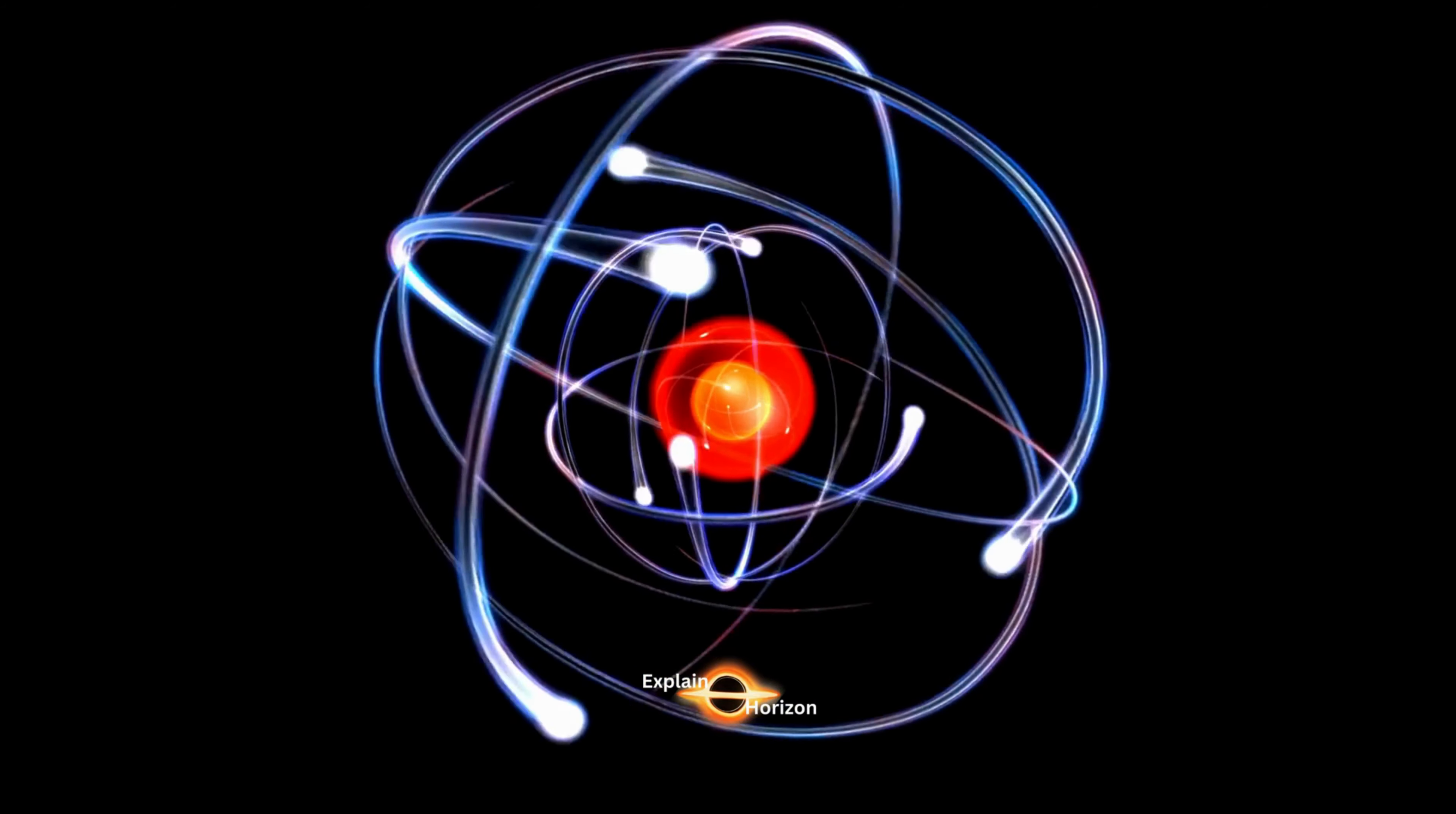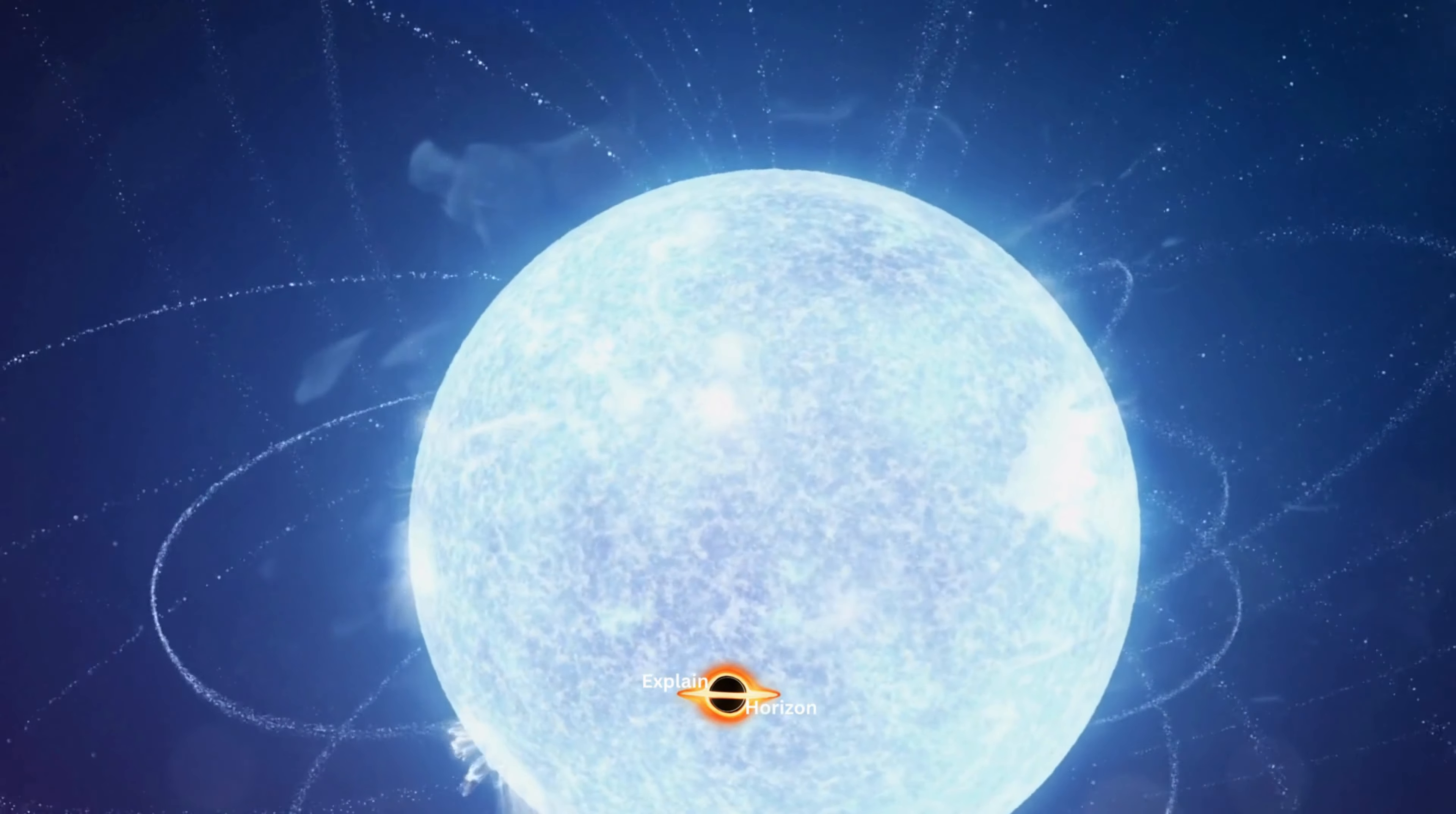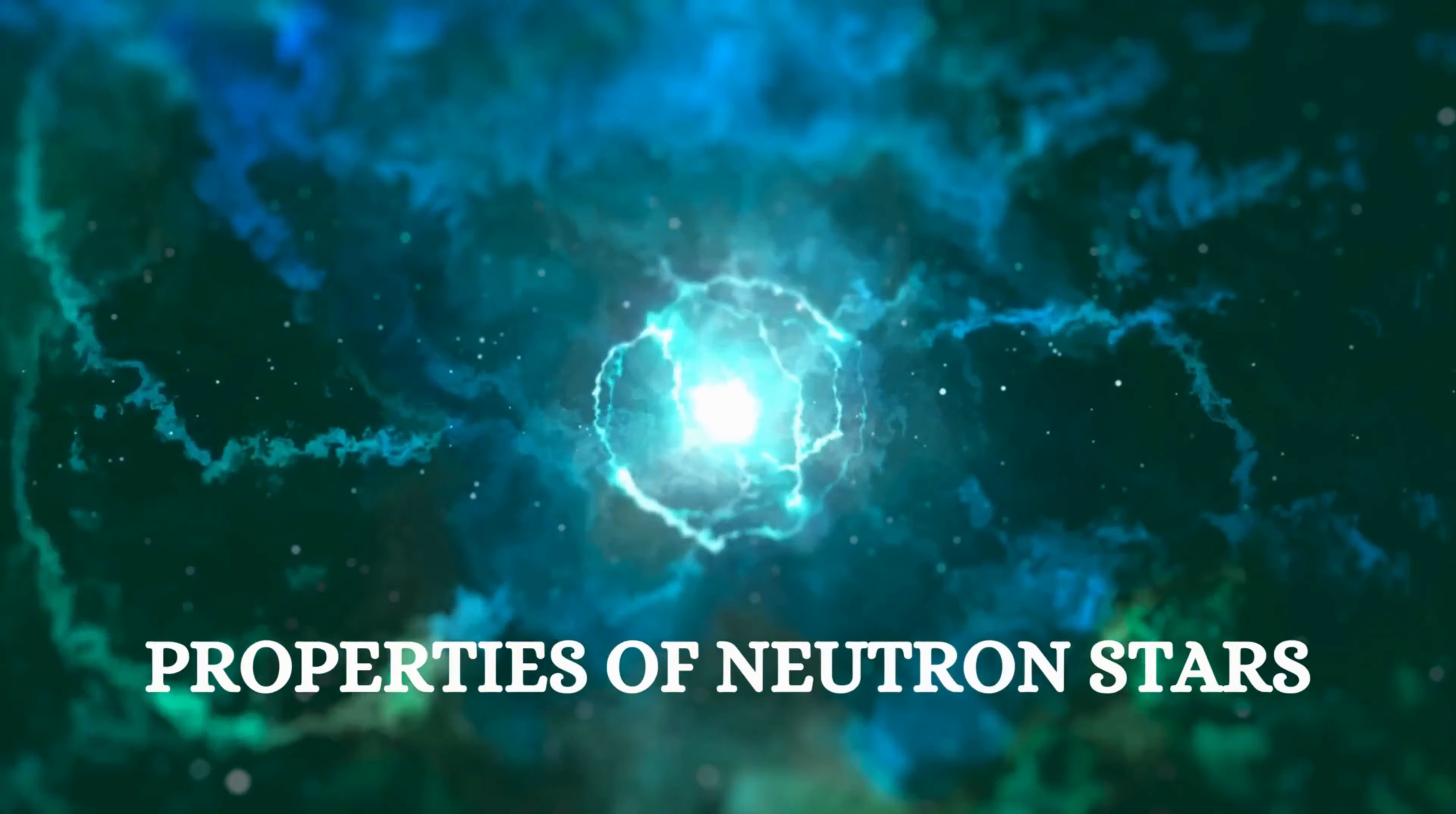They are made up of extremely dense and hot matter, composed of neutrons and protons. The outer layer of a neutron star is known as the crust, which is about 1 kilometer thick. Beneath the crust, there is a layer of superfluid neutrons, followed by a solid layer of neutrons.